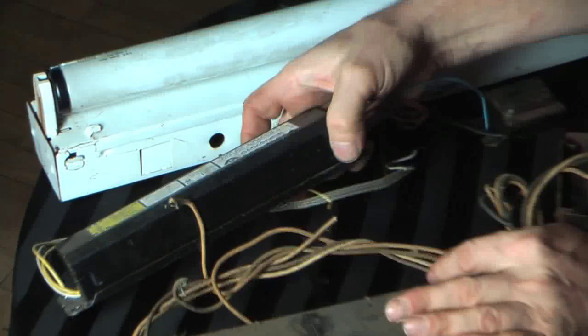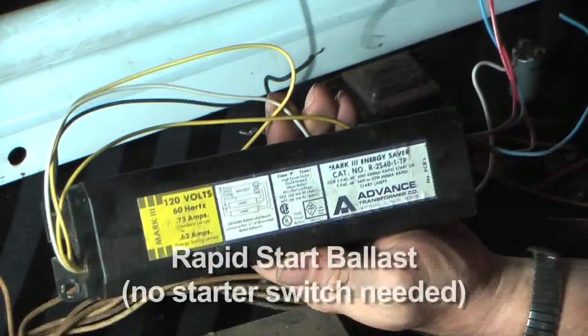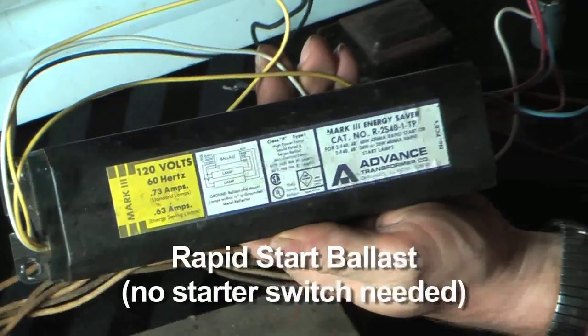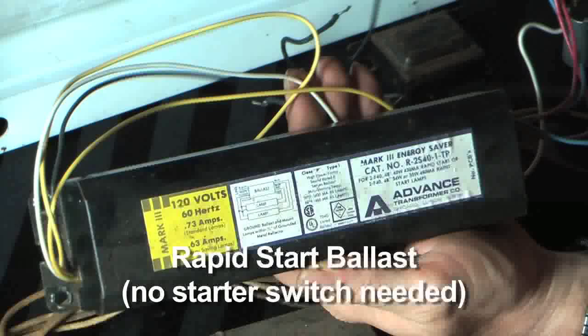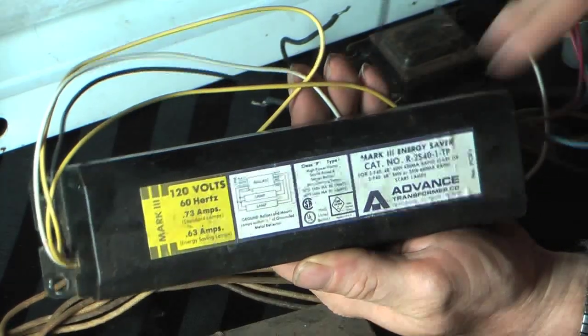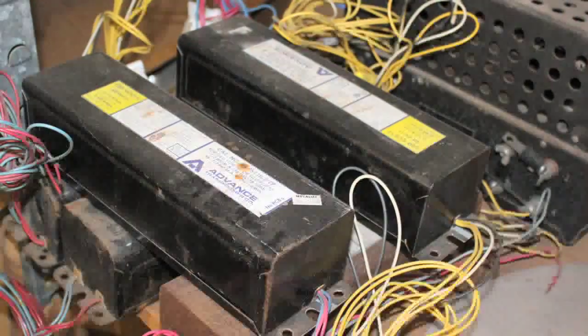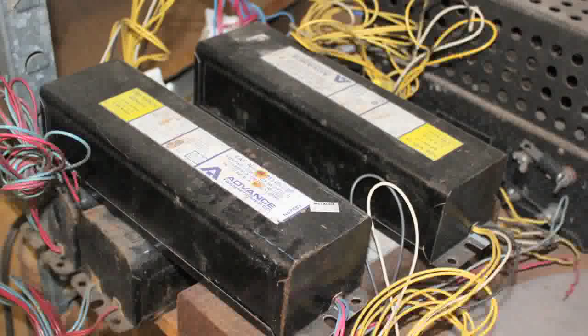And then as time progressed, they got smaller. This is a two lamp for two four foot lamps as well, 40 watt, rapid start ballast. And this particular case design is what they're using today even on the new electronic ballasts, pretty much the same case style.